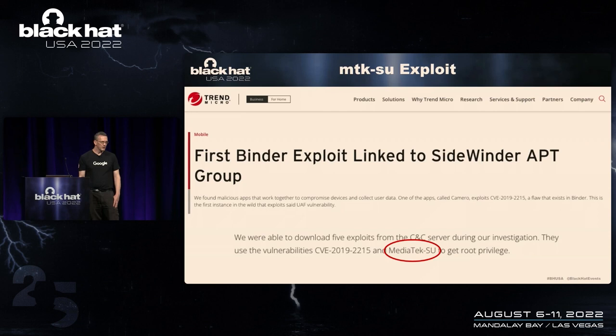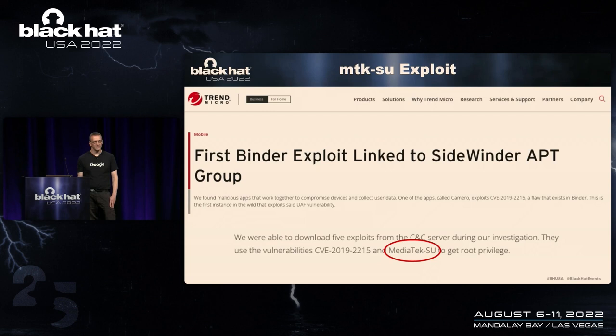The first more modern exploit we're going to talk about is MTKSU. Trend Micro published a blog posting about a piece of Android malware they found. The main focus was the exploit for CVE-2019-2215, aka BadBinder, but further down in the blog they also mentioned a second exploit, MediaTekSU. Trend Micro attributed the malware to an APT group, so we thought we'd take a look at it.